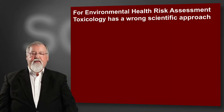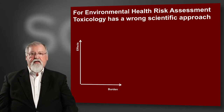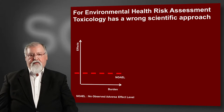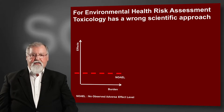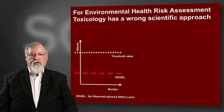If you see this system, on the ordinate there are effects, on the abscissa the burden. We have a toxicological No Observed Adverse Effect Level — the NOAEL — shown in this red line. Under this level, no effect is seen by toxicology. There is a second line in yellow here; this is the threshold value.